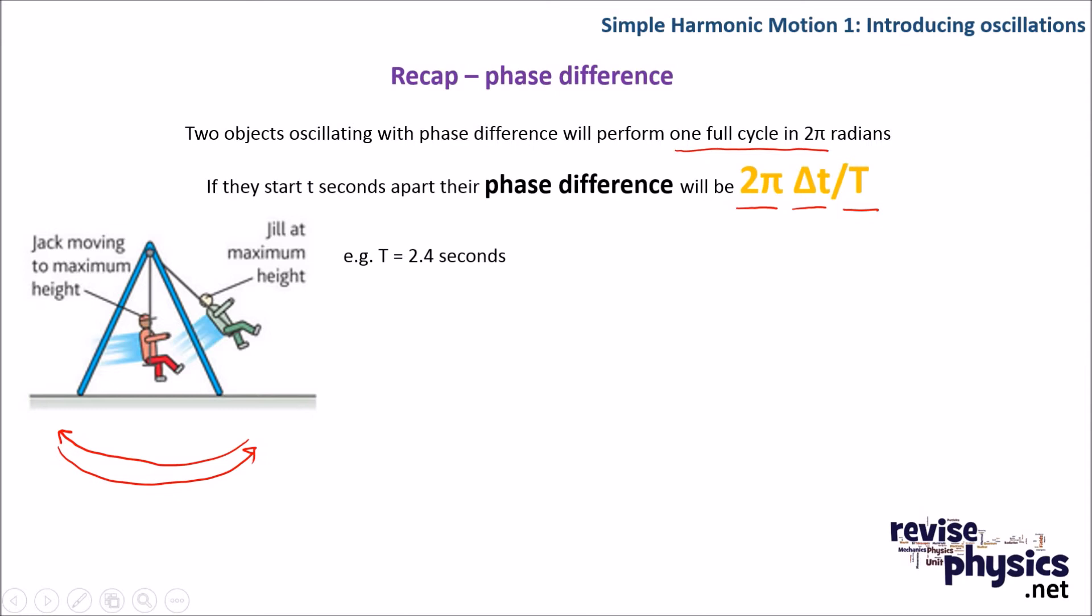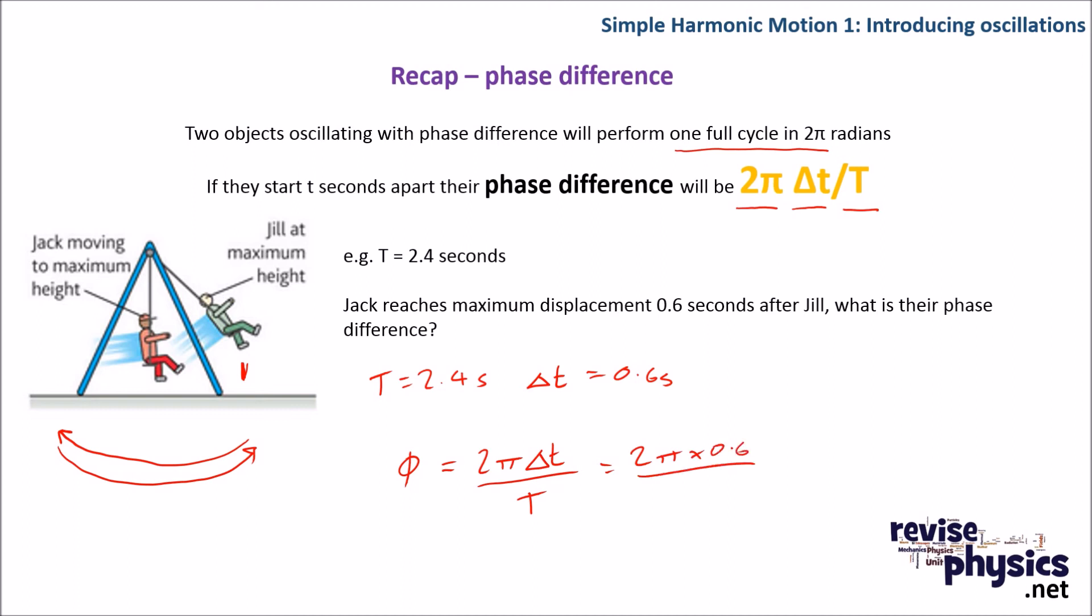So, for example, if the time period for one oscillation here was 2.4 seconds, Jack reaches his maximum displacement, so Jack gets to this point here that Jill is at in the picture, 0.6 seconds after Jill. What's their phase difference? Well, we know that T is equal to 2.4 seconds. We know that the Δt, or the difference in time between them reaching the same point, is 0.6 seconds. Using the equation above, we can work out that their phase difference is equal to 2π times that change in time between them reaching the same point, divided by the time period. Since Δt is 0.6, and T is 2.4, that then becomes 1.2π over 2.4, and 1.2 divided by 2.4 is just a half. So that would have a phase difference of a half π, or π by 2, radians.